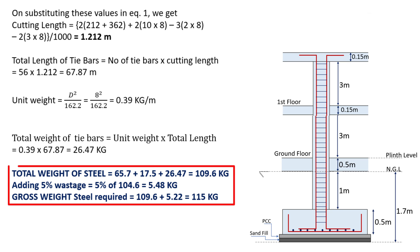Finally, the total weight of steel equals weight of main bars plus weight of side bars plus weight of ties, which equals 109.6 kg. Adding 5% wastage — 5% of 109.6 = 5.48 kg — the gross weight of steel required equals 109.6 + 5.48 = 115 kg. Hence, the total quantity of steel required for this column is 115 kg.